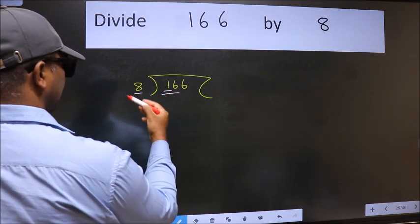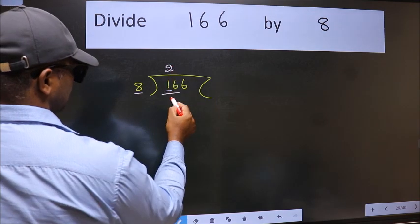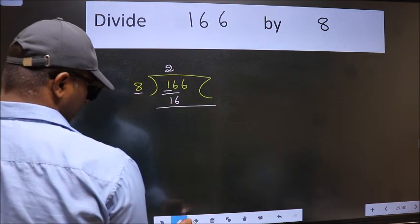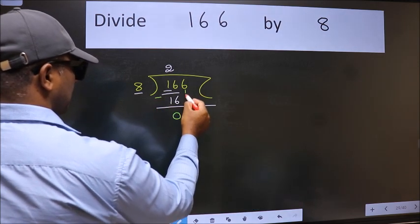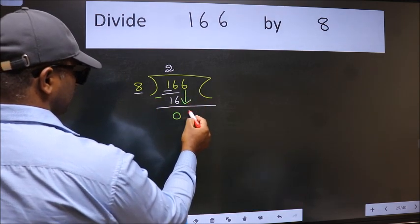When do we get 16 in 8 table? 8 to 16. Now we should subtract. We get 0. After this, bring down the beside number. So, 6 down.